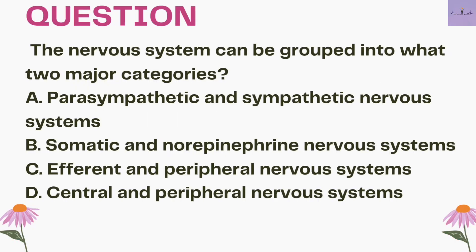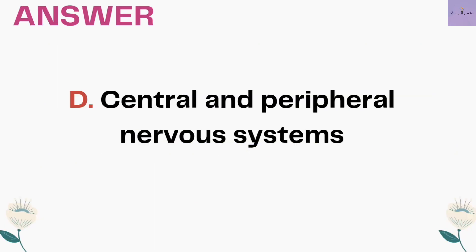Next question: the nervous system can be grouped into what two major categories? A. Parasympathetic and sympathetic nervous system. B. Somatic and norepinephrine nervous system. C. Efferent and peripheral nervous system. D. Central and peripheral nervous system. The nervous system is classified into two: central nervous system and peripheral nervous system. The peripheral nervous system is further divided into autonomic and somatic. The answer is option D, CNS and PNS.